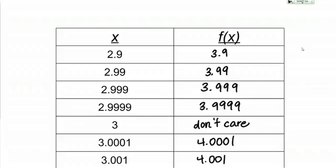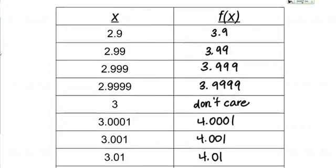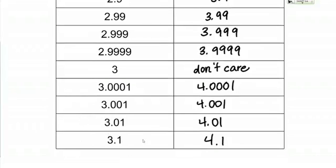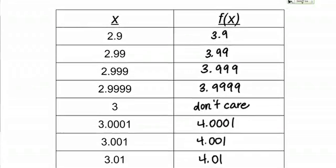Here I've created a table of values. In the left-hand column you see x values, and you'll notice that these x values are getting closer and closer to 3 from both sides. I have 2.9, 2.99, 2.999, and I'm just getting closer and closer to 3. And then even from values that are greater than 3, I've got 3.1, 3.01, 3.001. So from both sides I'm getting closer and closer to the x value of 3.